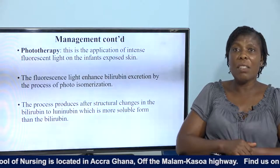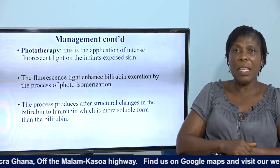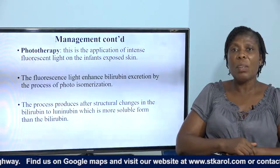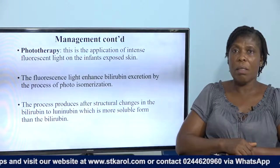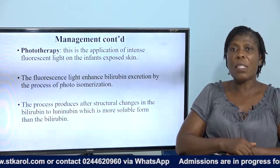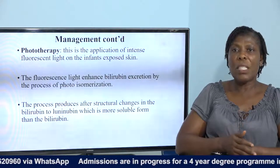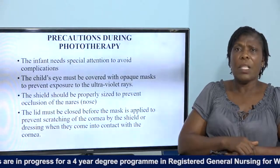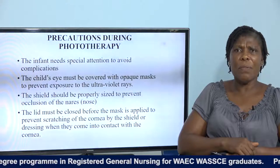Phototherapy is the application of fluorescent light on the infant's exposed skin. We place the baby under this light with the skin exposed, with the exception of the genital area, which we cover to protect the baby. The process causes changes in the bilirubin making it more soluble, and then the bilirubin is excreted. Let's look at the cautions when you place the baby under phototherapy.